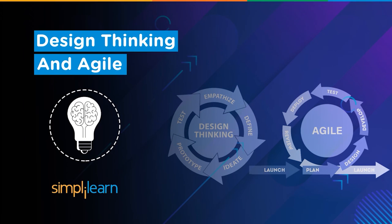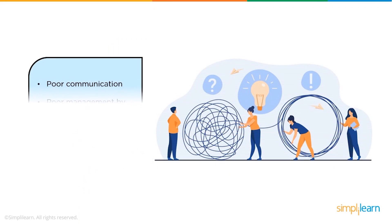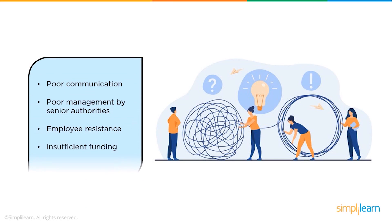Did you know that IDC has confirmed 30 to 35 percent of IT projects still fail? The major reason behind the failure of software development projects is due to poor communication, poor management by senior authorities, employer resistance, and insufficient funding.